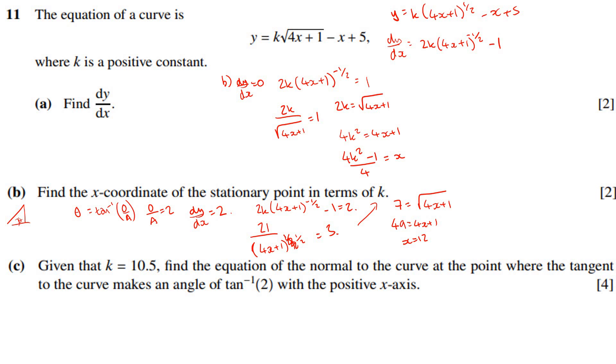Now, the normal gradient is going to be perpendicular to the gradient of the tangent. The gradient of the tangent was 2, then the gradient of the normal would be negative half. We know that when x equals 12, that's where our point is, but also we need to find out when x equals 12, what's y? So that'll mean that y is equal to 10.5, because k is 10.5, times the square root of 4 times 12 is 48 plus 1 is 49, minus 12 plus 5. Remember, x is 12. So you get y equals 10.5 lots of 7 take away 7, which will be 66.5 once you write that out, so y equals 66.5.